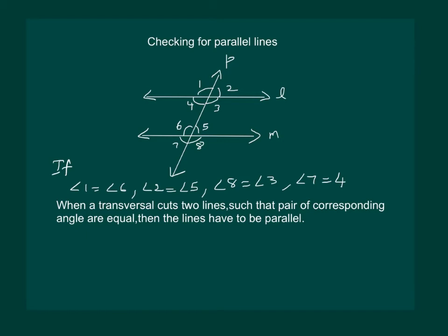Hence we state that when a transversal cuts 2 lines such that pair of corresponding angles are equal then the lines are parallel. Similarly we can use the other properties.